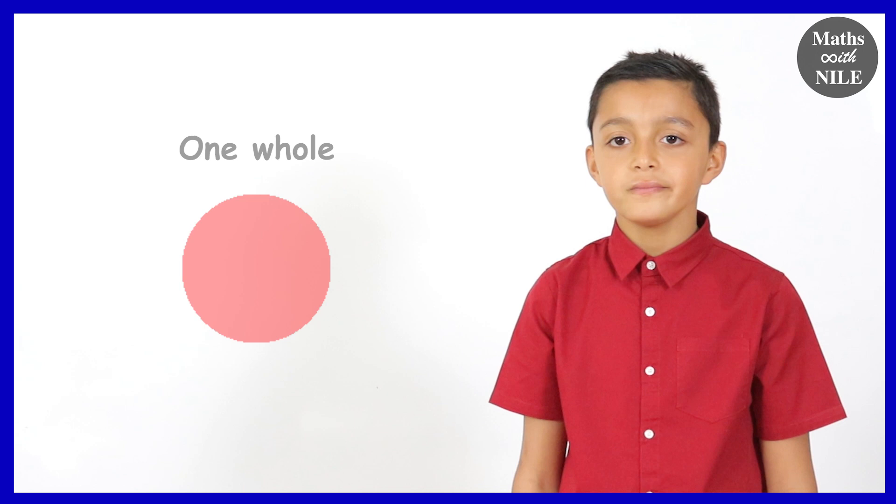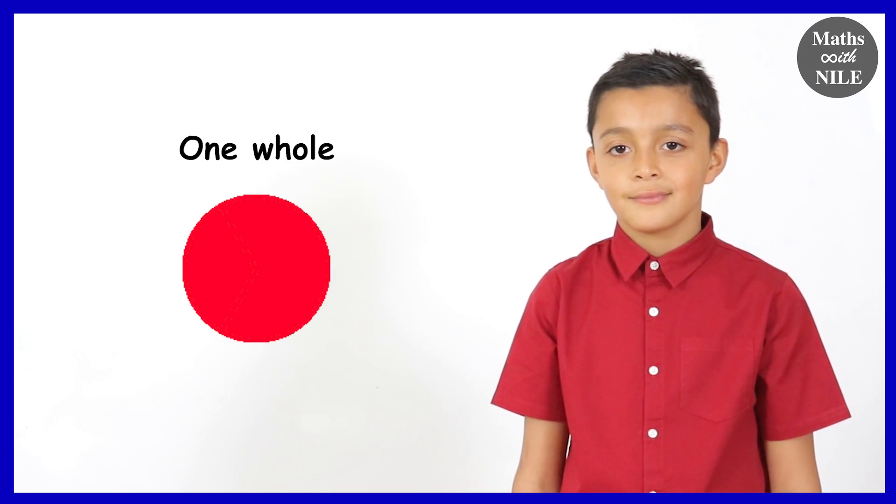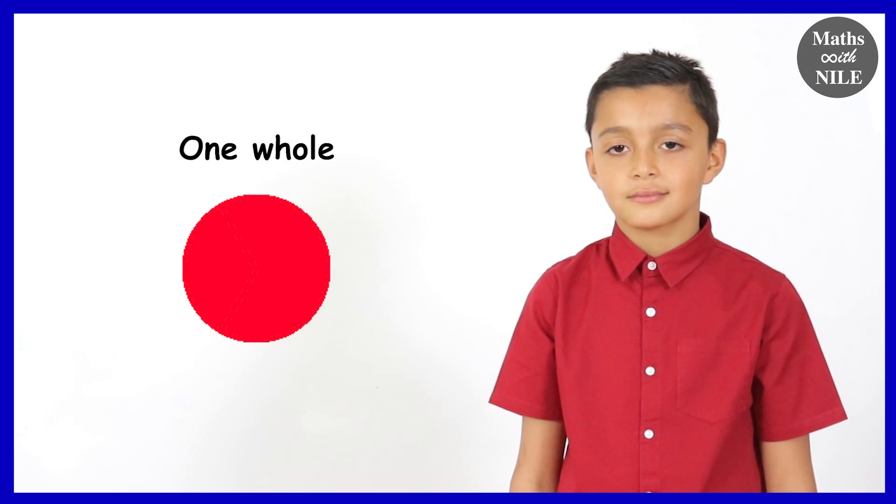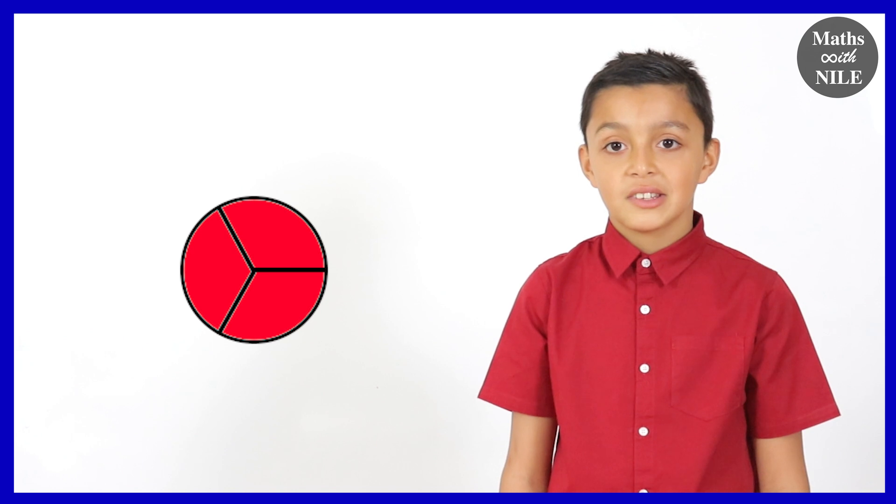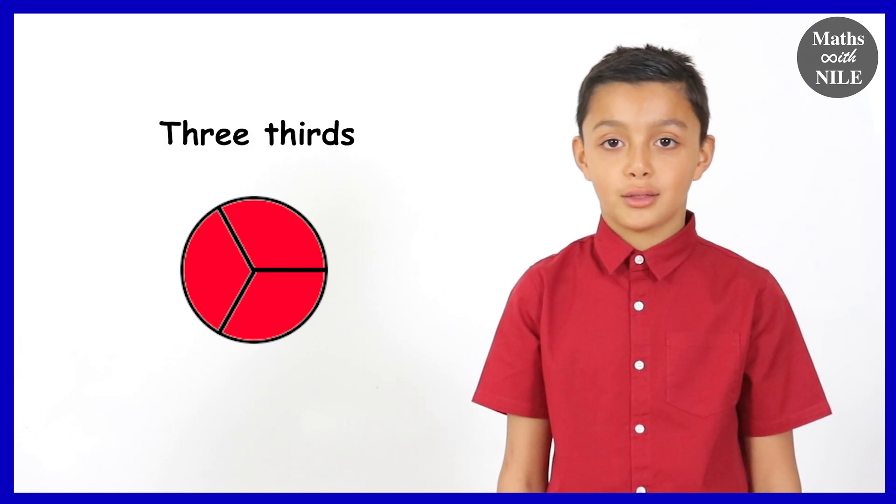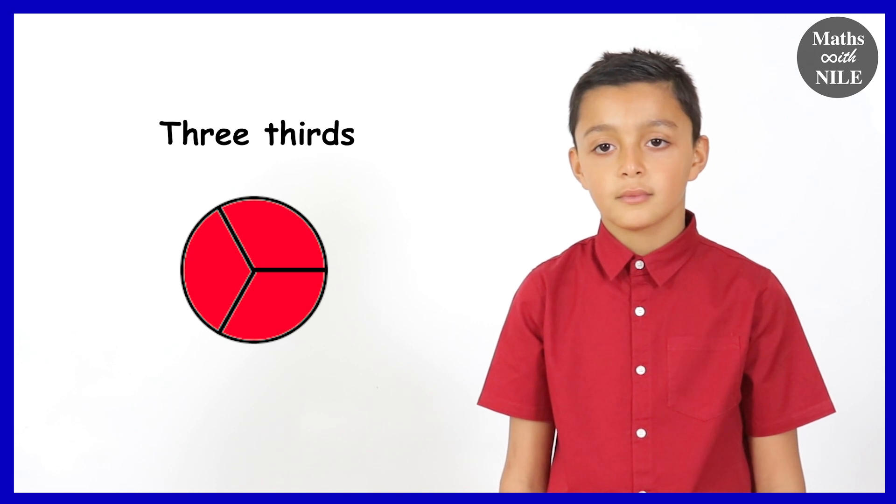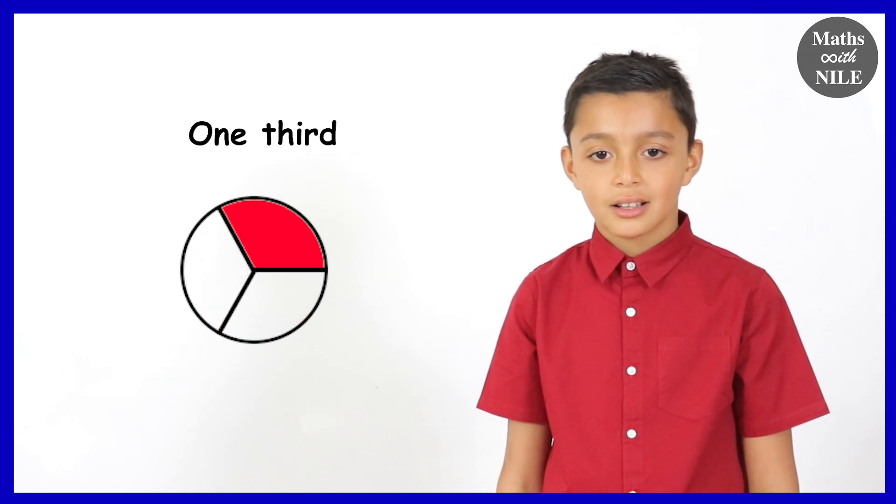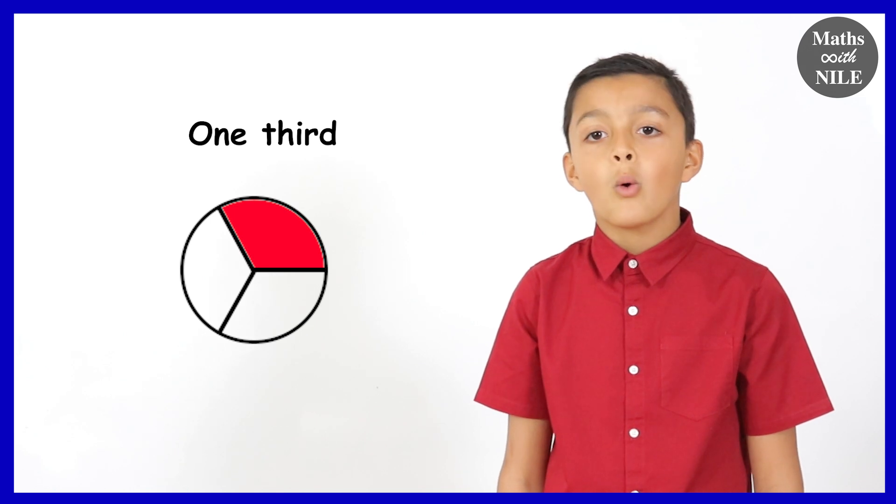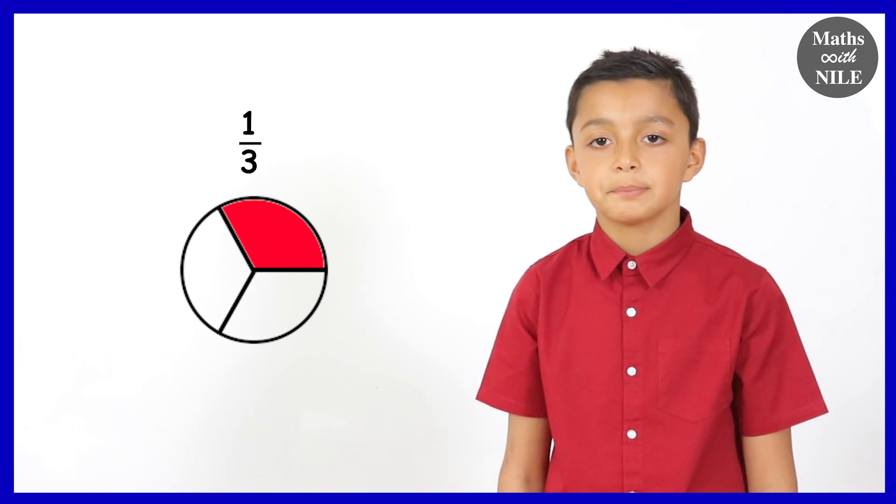Now, let's look at the whole again. Do you know what happens if we split it into three equal parts? It becomes three thirds. Three thirds. And each of these three equal parts, what do we call it? One third. And how do we write one third? One over three. One over three.